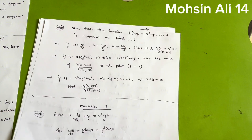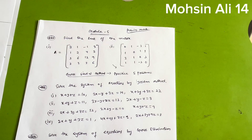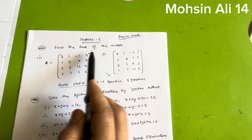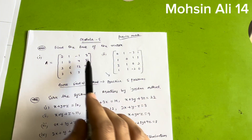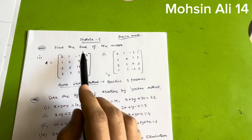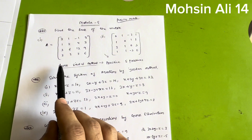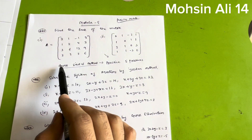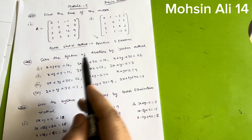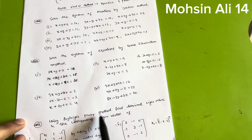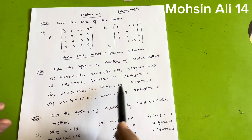Now coming to Module five — another passing module. Rank of matrix is a very simple 8-mark question in VTU examinations. Practice five problems on rank of matrix from previous question papers, which I will upload on my Instagram account. Also focus on five problems from the Gauss-Seidel method. I have also listed equations to solve by Gauss-Jordan method — you can pause the video to note them down.